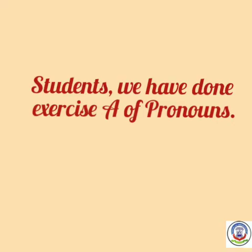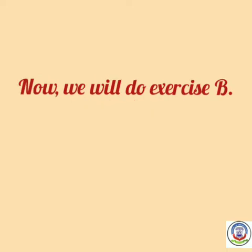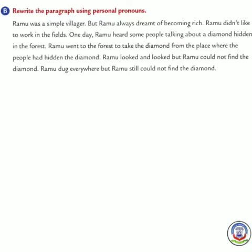We have done Exercise A of pronouns. Now we will do Exercise B. Children, first underline the nouns and then rewrite the paragraph using personal pronouns. The name Ramu is repeated again and again, so we will use pronoun 'he' for Ramu. 'People' is used again and again, so we will use 'they' for people the second time. 'Diamond' is used many times — it is the name of a thing — so we will use pronoun 'it' instead of diamond. Now let's start Exercise B using personal pronouns.